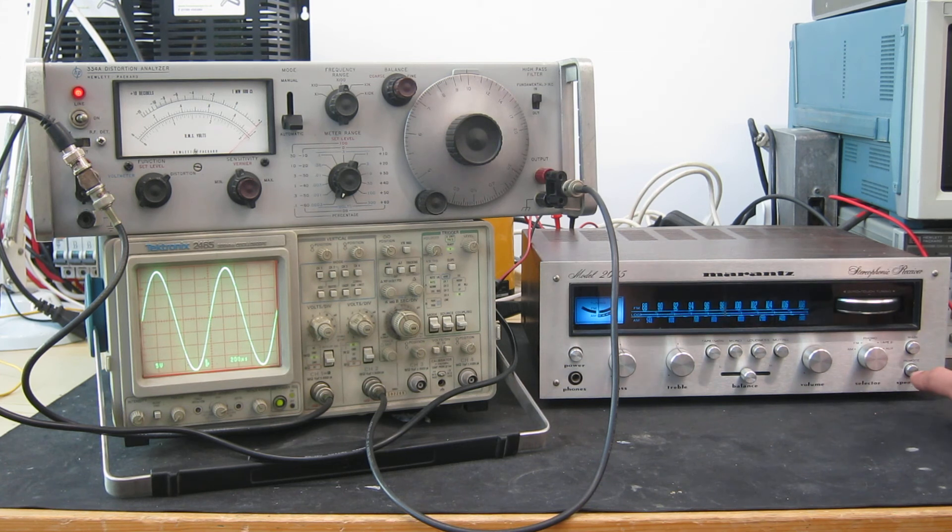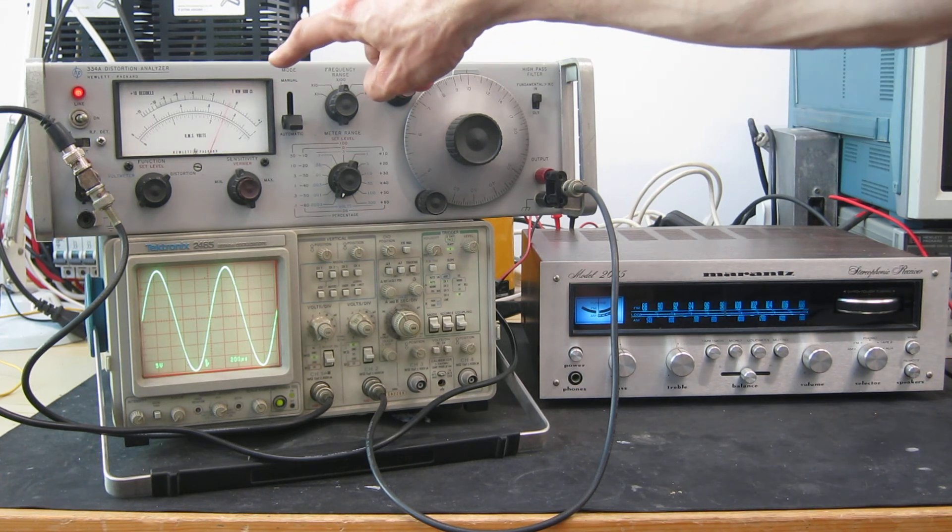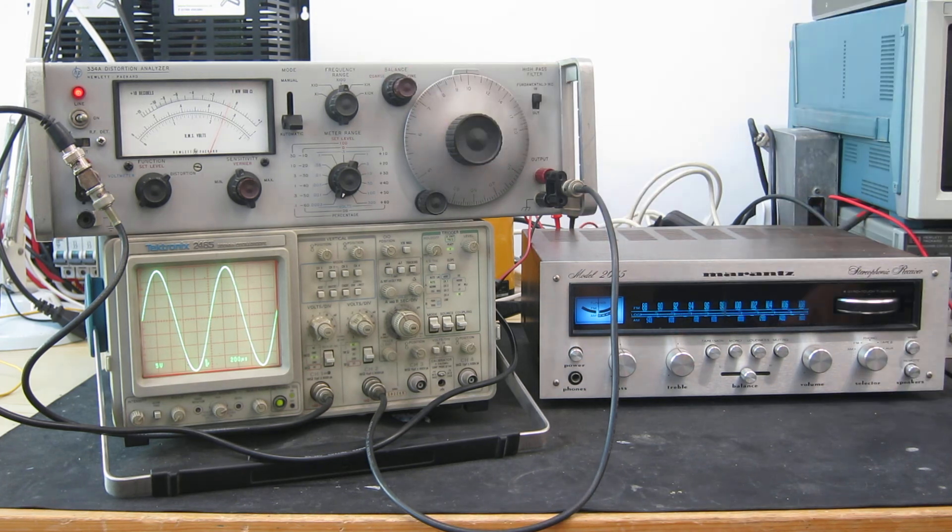Again let's try disconnecting the load, see if that makes a difference. Okay in this case when we're really pushing the amplifier hard the distortion actually goes down somewhat when we take the load off, which is to be expected because it's not working as hard. So 0.07% distortion or thereabouts. Put the load back on. Distortion heads back up to about 0.1%. Which is excellent and much better than the specification.